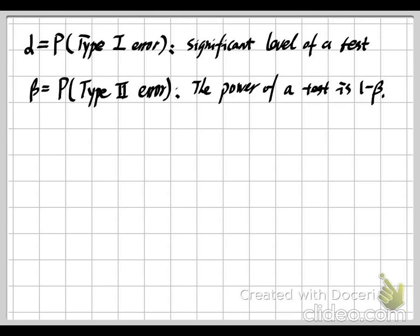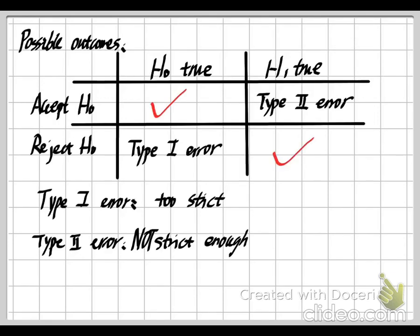We also have another important value called the p-value. People are interested in how to decrease the probability of both types of errors. In general, if we are too strict, the probability of a Type 1 error increases; if we are not strict enough, Type 2 error is more likely. So it is really hard to adjust the critical level to decrease both alpha and beta together.